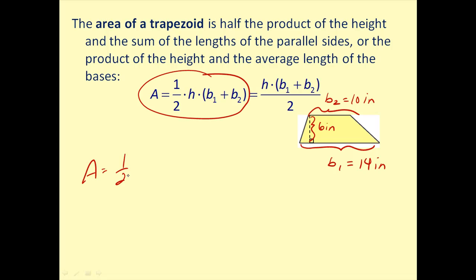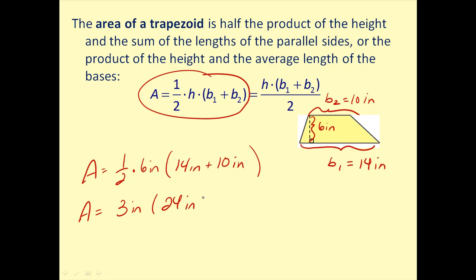The area equals one-half times the height of 6 inches times the sum of base 1 plus base 2, or 14 inches plus 10 inches. Notice I'm leaving the units in the formulas — it reminds you that area is in square units and perimeter is not. So one-half times 6 inches equals 3 inches; 14 inches plus 10 inches equals 24 inches; 3 times 24 equals 72, and inches times inches equals inches squared. So the area is 72 inches squared.